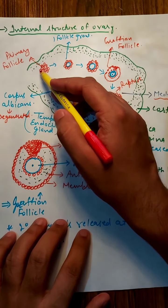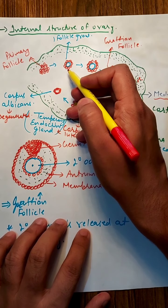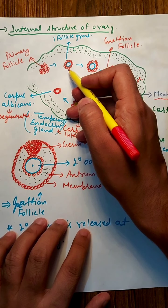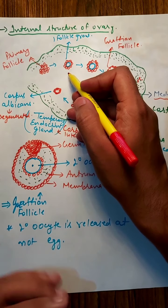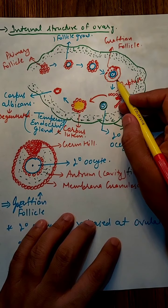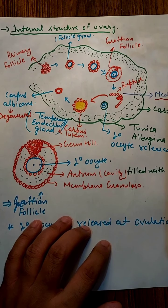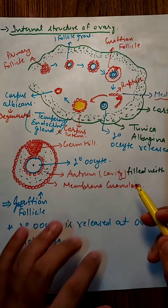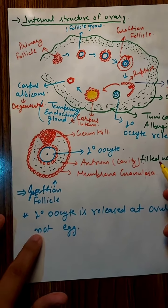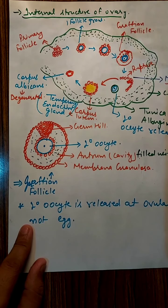This primary follicle will convert into a secondary follicle, then a tertiary follicle, and finally it will grow into the Graafian follicle. Let's discuss the structure of the Graafian follicle in detail.